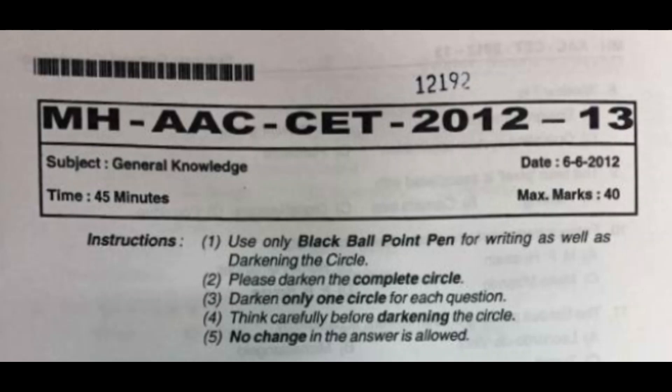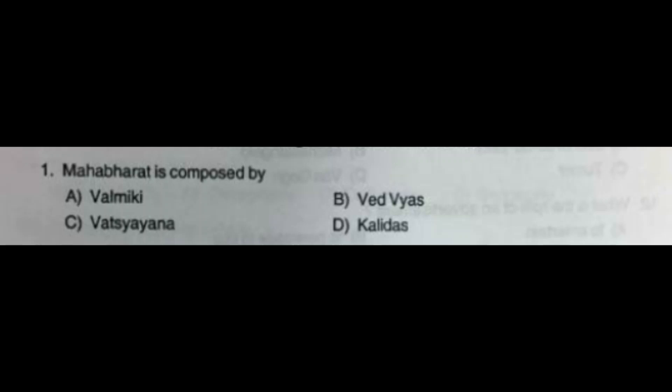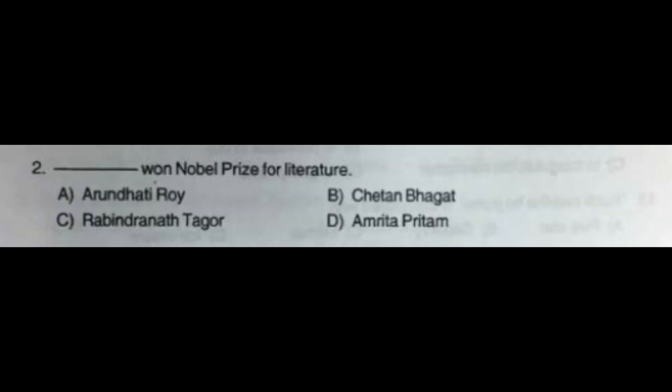Question number 1: Mahabharat is composed by — option A: Valmiki, option B: Vedvyas, option C: Vatsyayana, option D: Kalidas. The correct answer is option B: Vedvyas. Question number 2: Dash won Nobel Prize for Literature — option A: Arundhati Roy, option B: Chetan Bhagat, option C: Rabindranath Tagore, option D: Amrita Pritam.